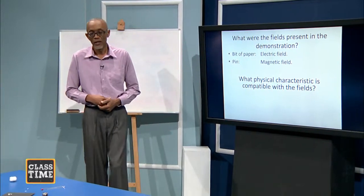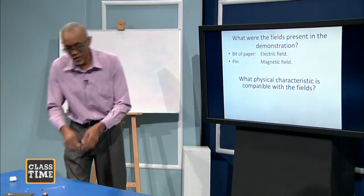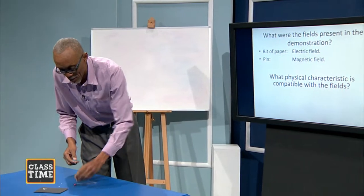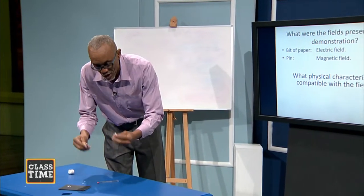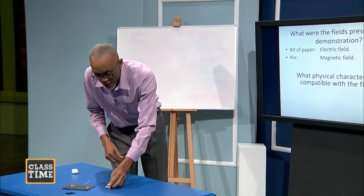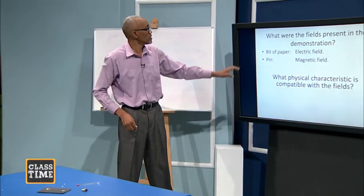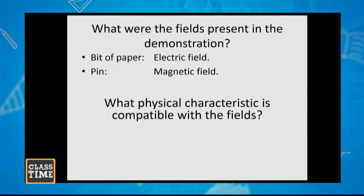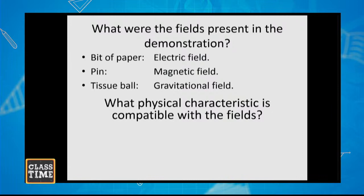Then you have the coin — that was in a magnetic field. And we will see what physical characteristic that had. And then the tissue ball — it's in a gravitational field. We are all in a gravitational field. Once we are on Earth, once we are on any planet, we are under the influence of a gravitational field.